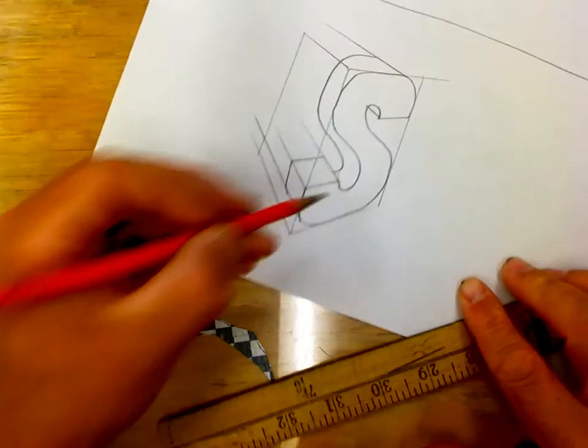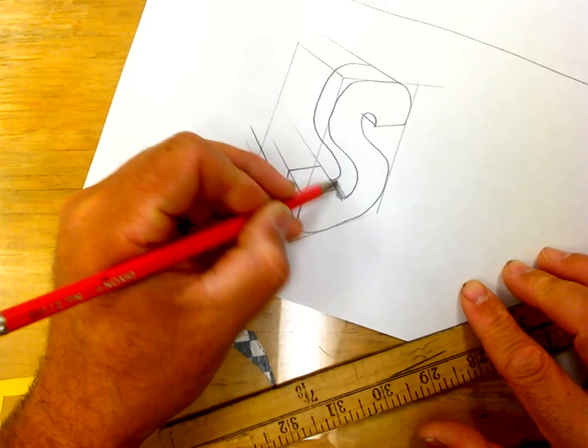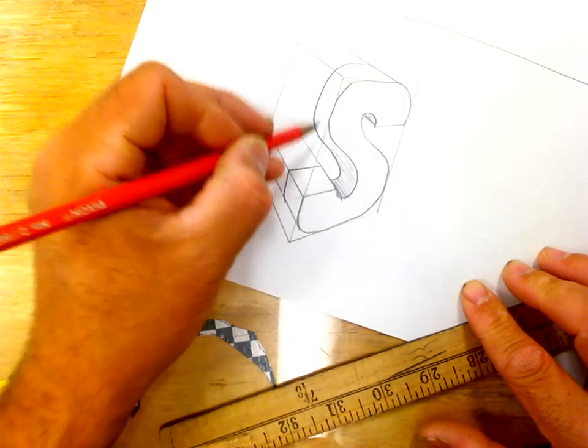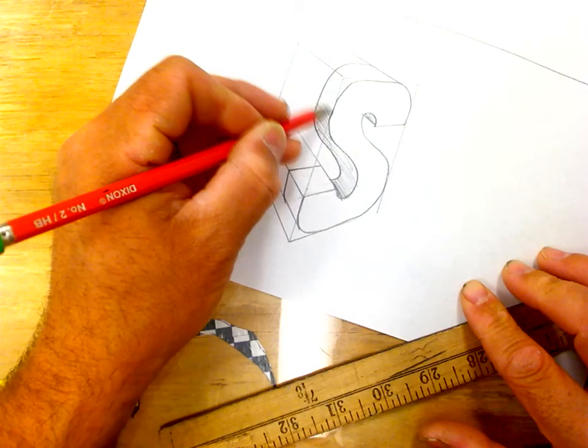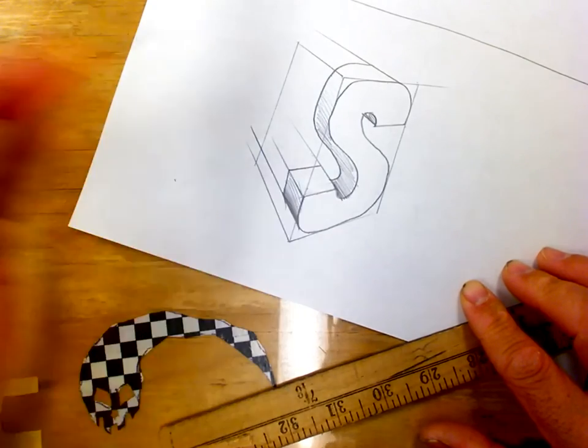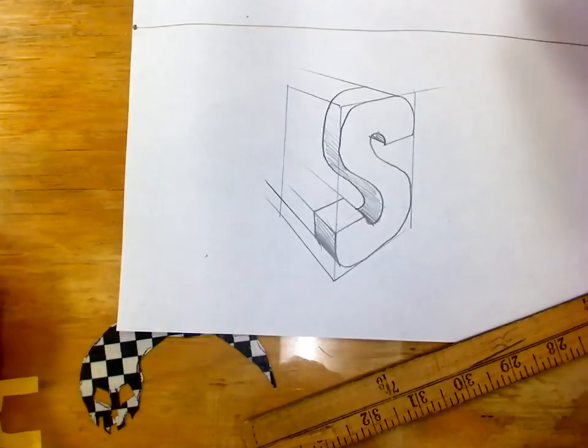And there you go. If you get all fancy, make it all 3D. And fade it like all the other projects you've learned. Darken fade. There you go.